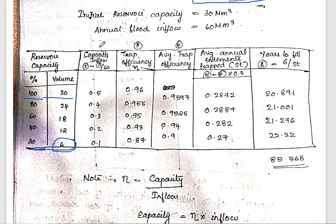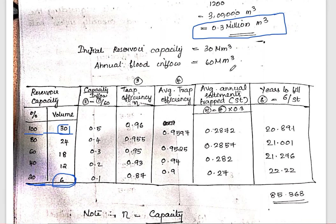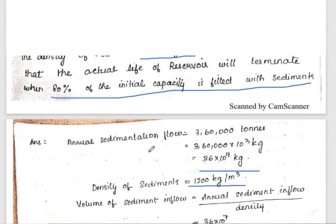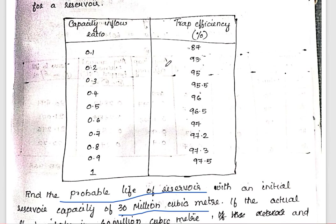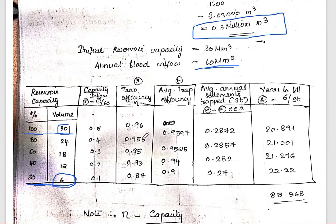The next goal is capacity divided by inflow. Capacity is 30, inflow is 60. The annual flood inflow is 60. So: 30 divided by 60 is 0.5; 24 divided by 60 is 0.4; 18 divided by 60 is 0.3. Capacity by inflow gives the trap efficiency function. Values: 0.1 → 87%, 0.2 → 0.93, 0.3 → some value. Average trap efficiency is then calculated.